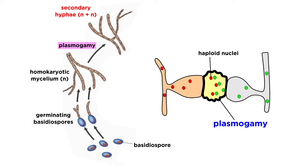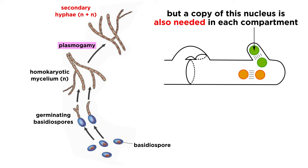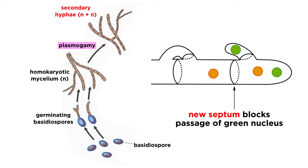Hyphae from each of the homokaryotic mycelia will fuse through a process called plasmogamy and form a hyphal compartment that contains a pair of unique nuclei, one from each parent mycelium. Now whenever a new hyphal compartment is formed, one of the nuclei will divide with a dollypore septum formed between each cloned nucleus. However, this process could cause the nucleus from the other parent to be left behind in that compartment. That nucleus needs to change compartments, but the dollypore septum is blocking its passage.